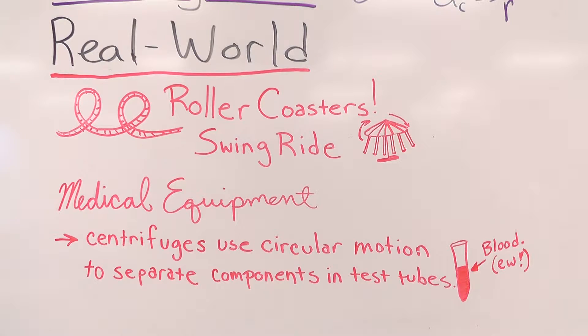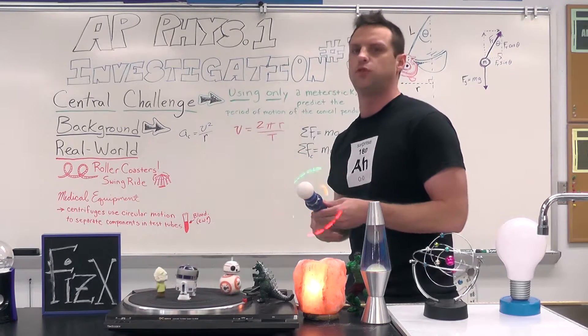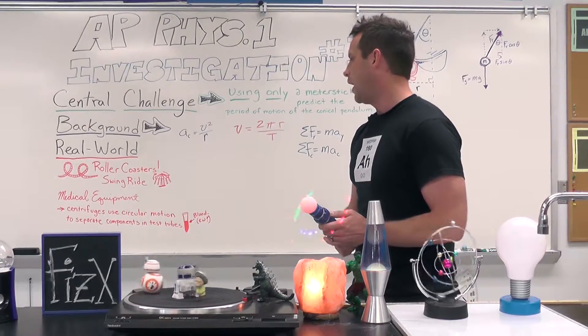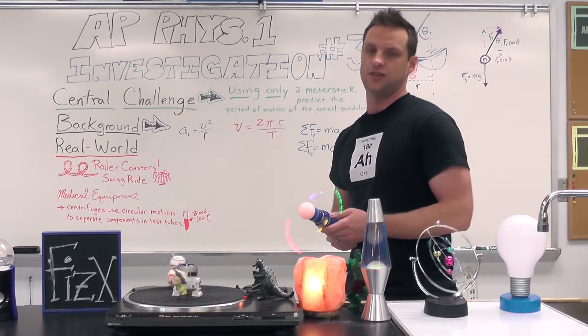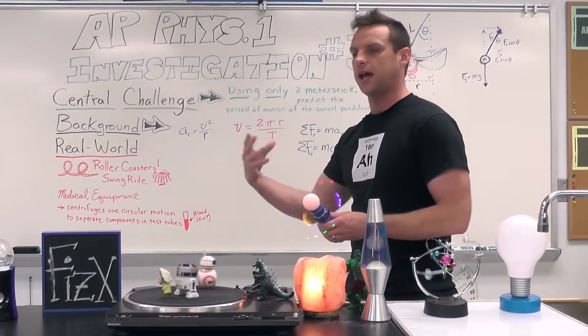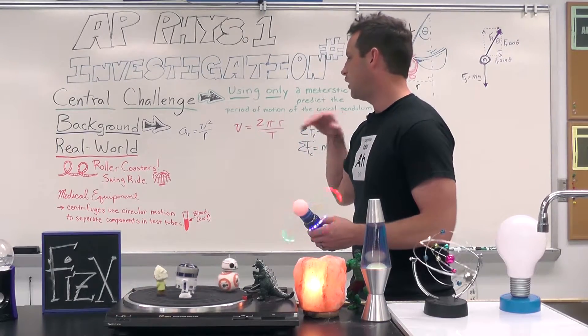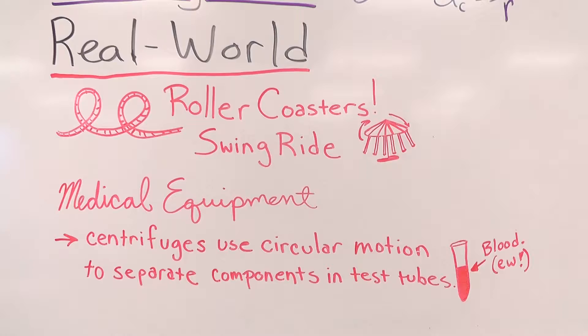Real world applications, mentioned by the College Board are roller coasters, doing roller coaster loop-de-loops. You've got a lot of centripetal acceleration going on there, and you've got a normal force acting centripetally there between the track and the car. And then you've got swing rides also at amusement parks.